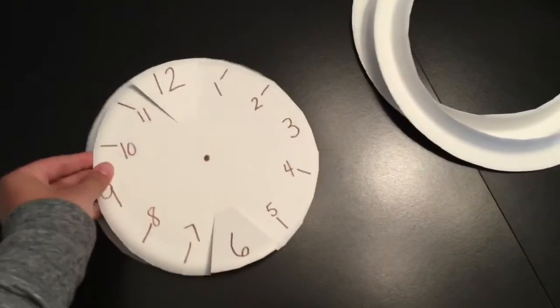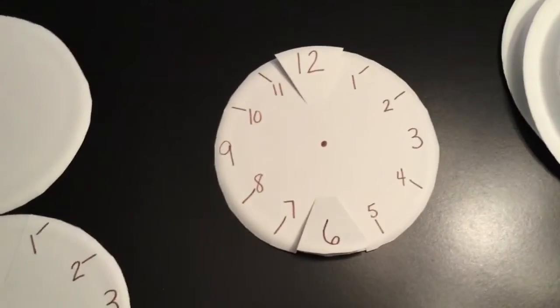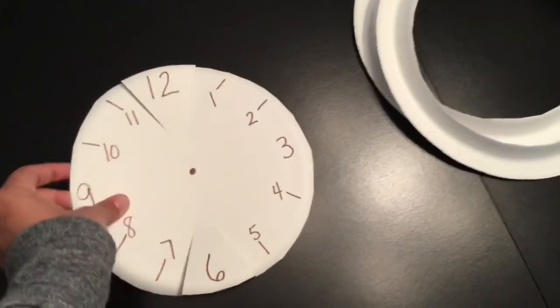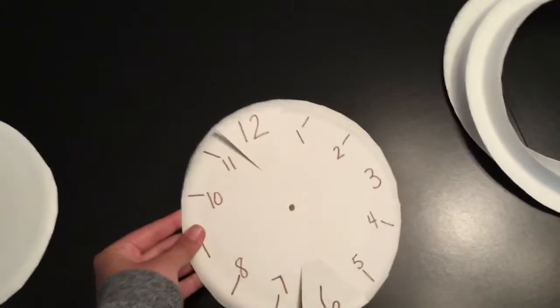Now I'm going to put this piece of paper on top of the other circle and I'm going to put two pieces of tape, one on this side and one on this side so that they stay together.